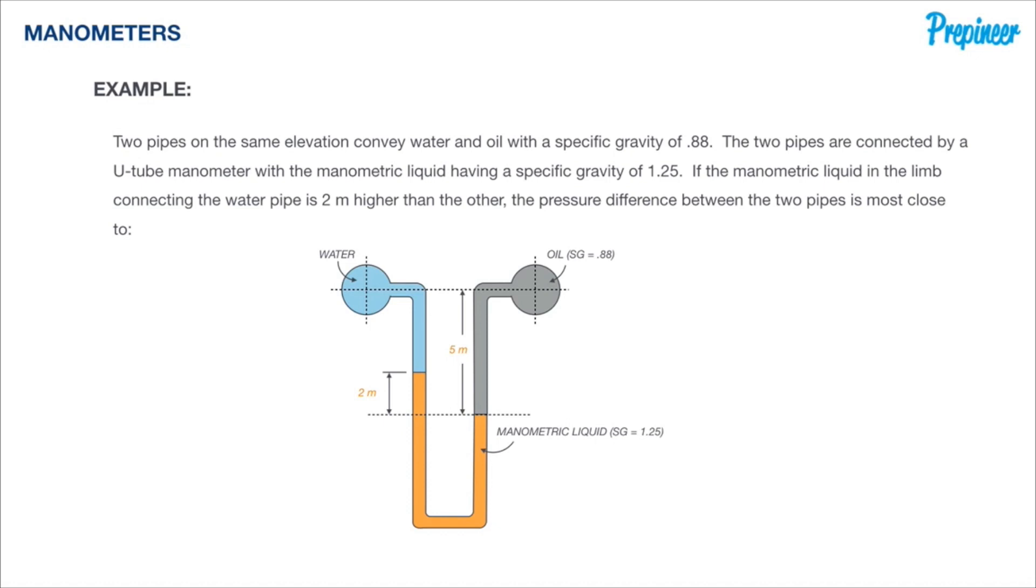So here we have two pipes. One's carrying water and the other is carrying oil. If you can just imagine it, the flow of these fluids are going into and coming out of the screen at us. These are two pipes and in between these pipes is the manometer measuring the pressure difference between the two flowing fluids.